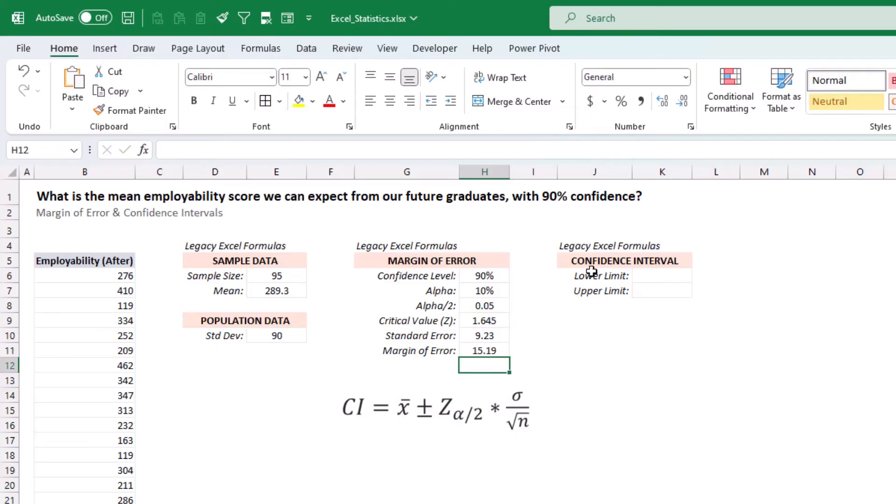And then to get the limits for our confidence interval, we can grab our point estimate, subtract the margin of error, and then grab the point estimate and add the margin of error. And I selected the wrong cell here. There we go.